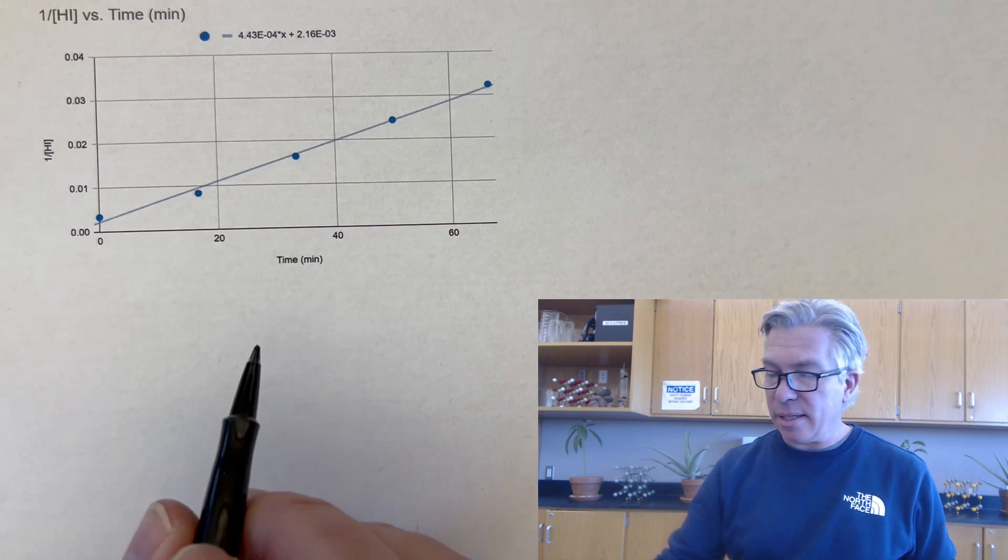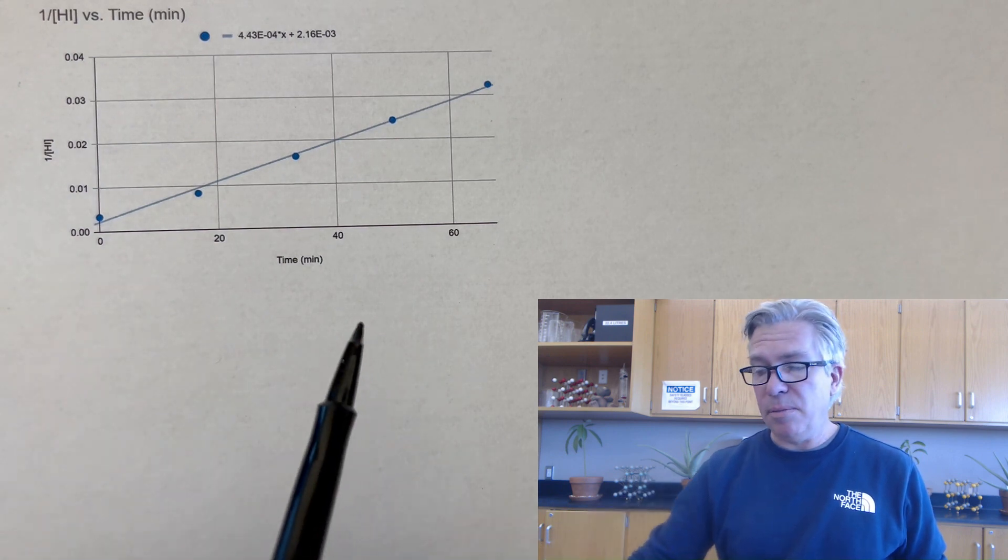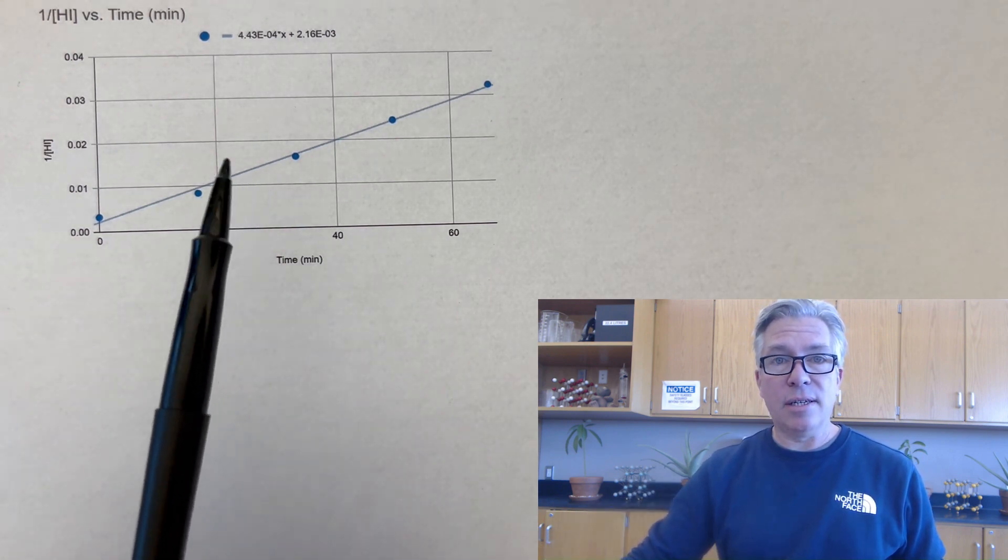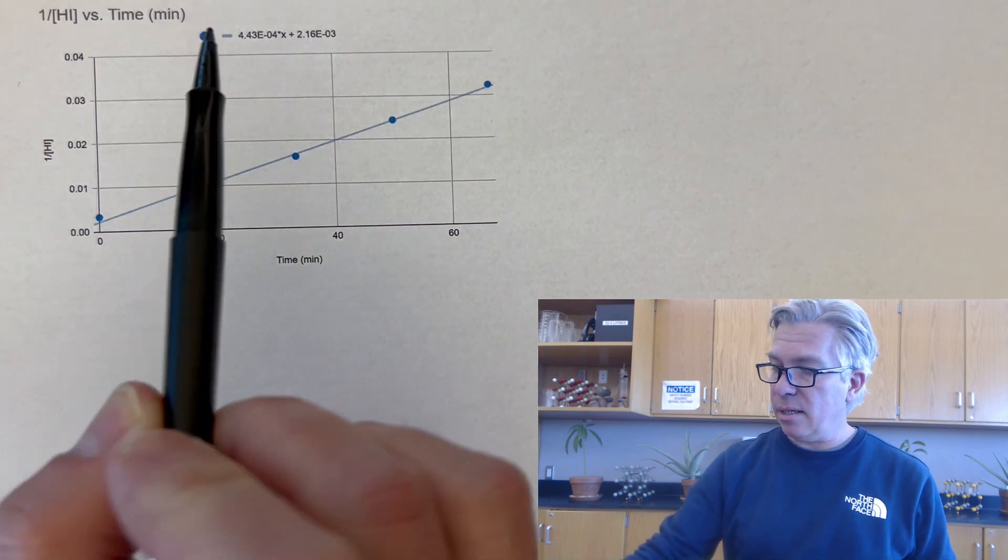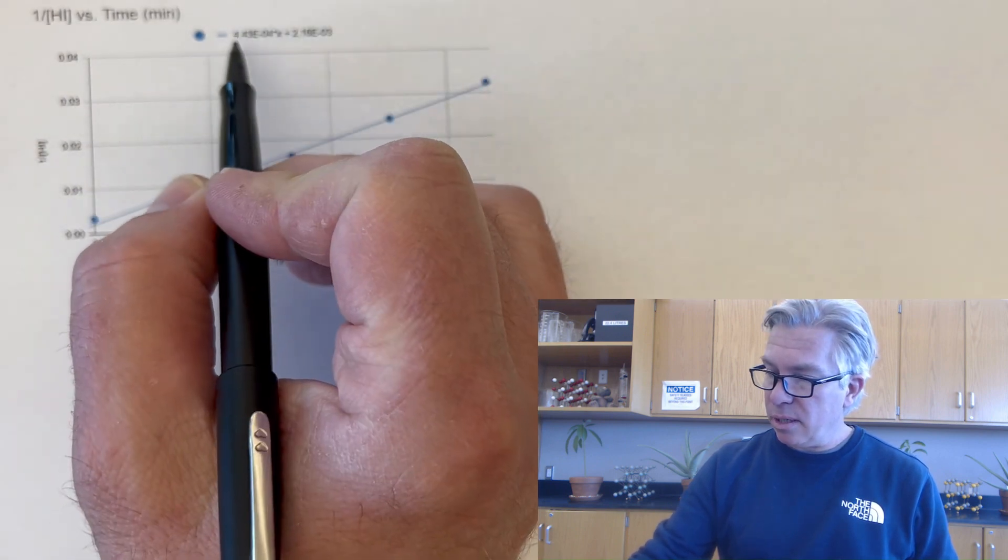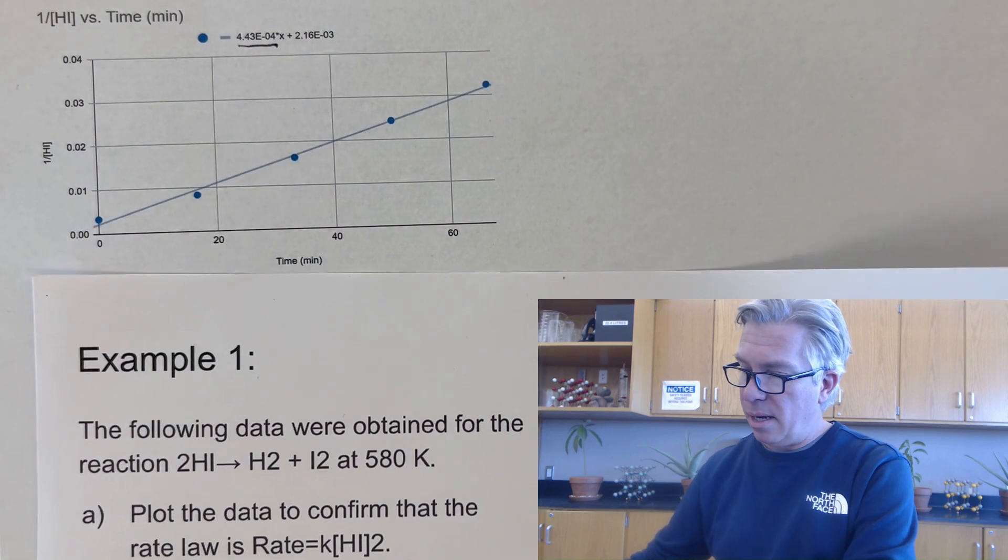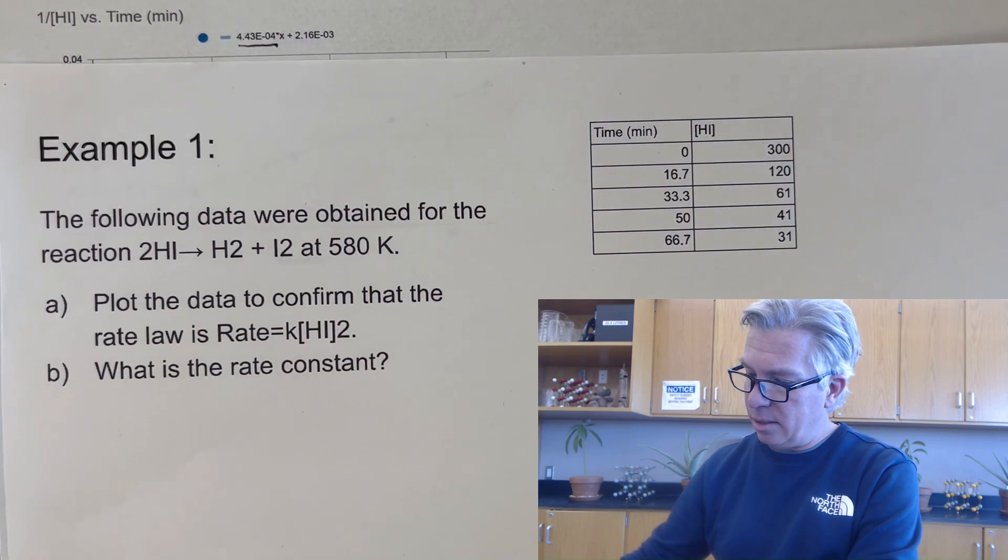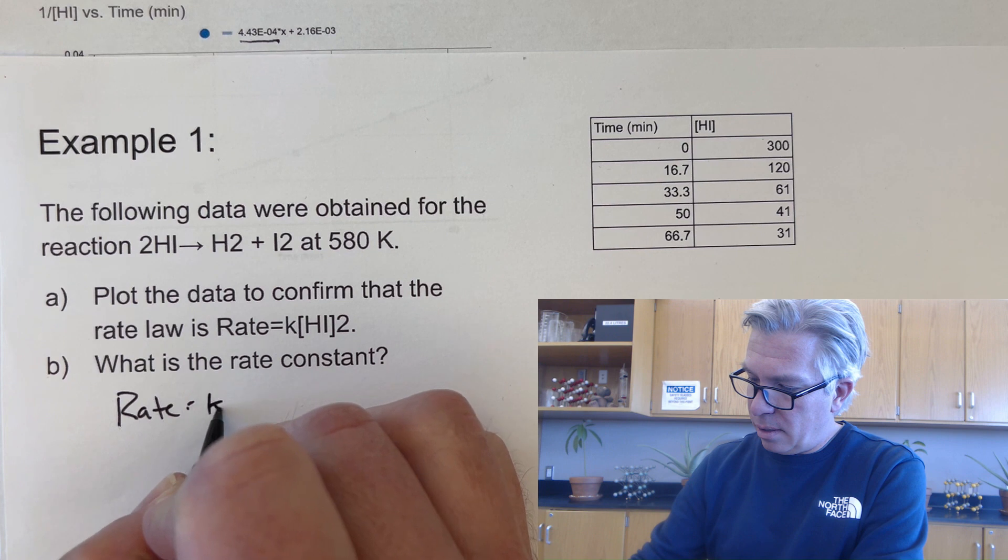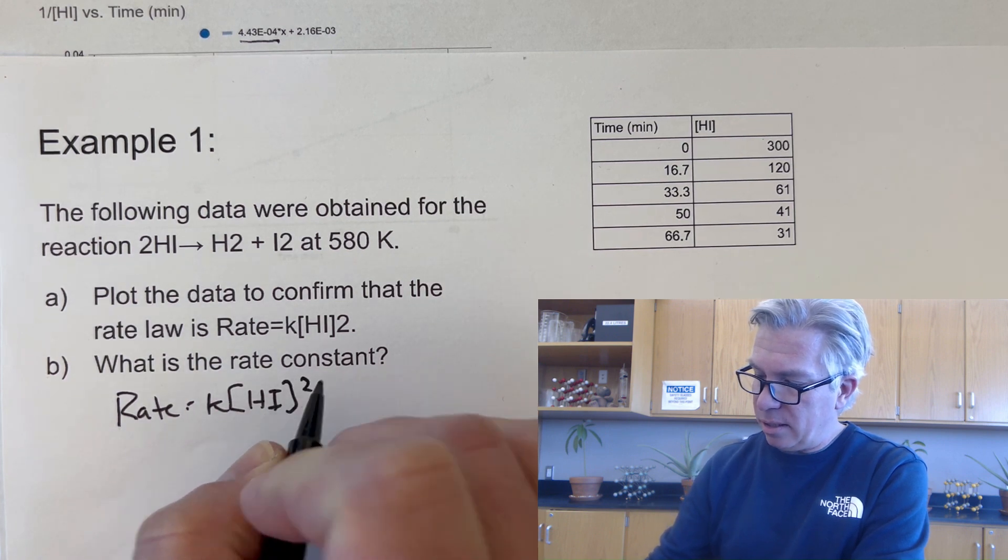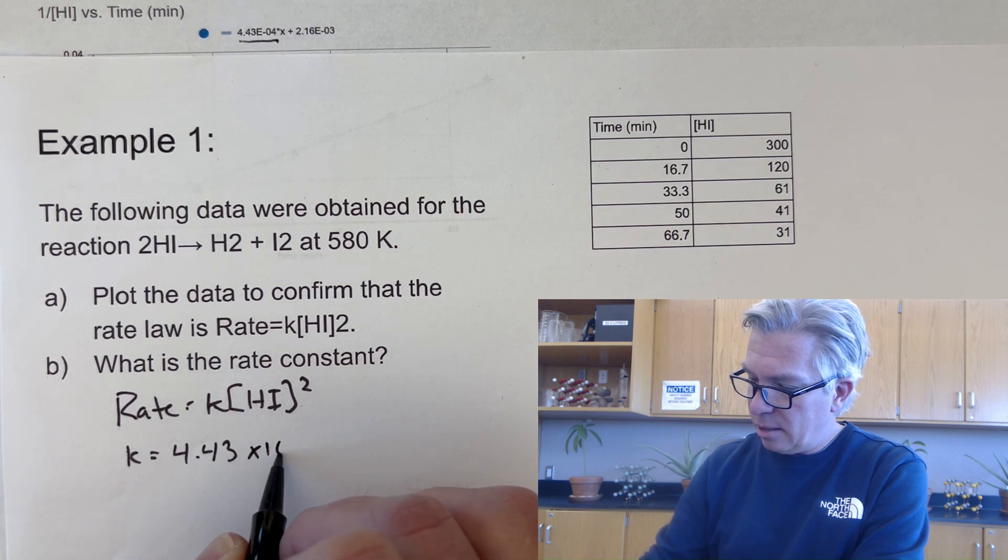And so because that is, and this could be your justification, if you're ever asked to justify your answer, you can say, I know it's second order, because the graph of the inverse concentration versus time is a straight line. And that straight line has this equation. And what's most important here is the slope, because the slope of that line is the rate constant.